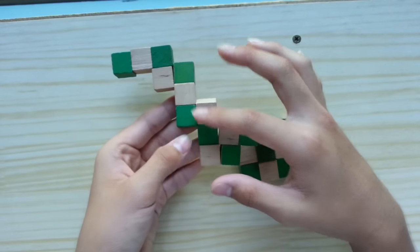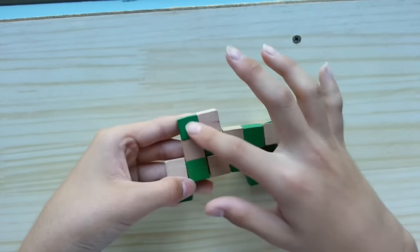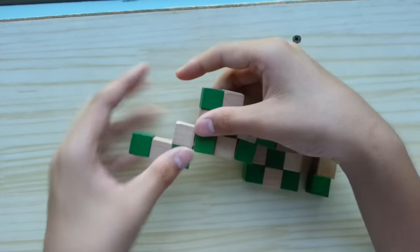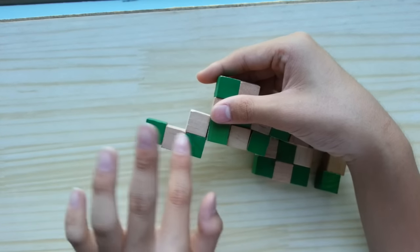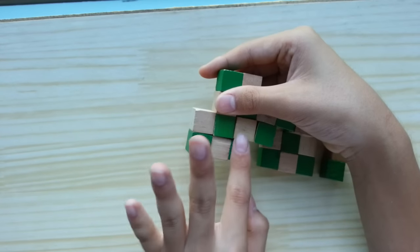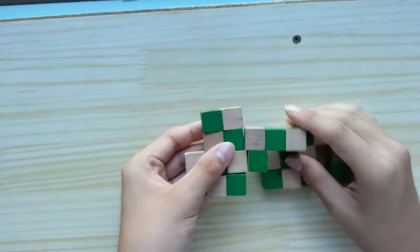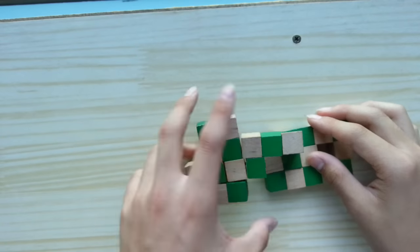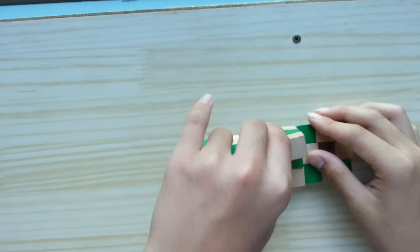Now put these two down. So you'll have another shape built. And just put these leftover three. These three blocks. Just connect it like that. So you'll get this shape. Now what you need to do is just flip it over.